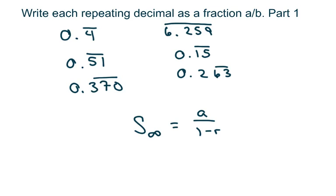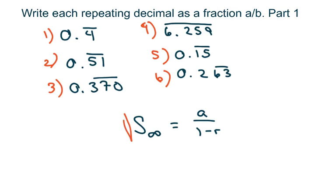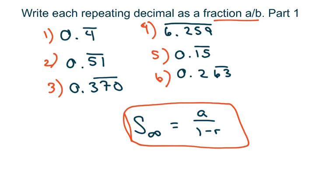Hi everyone. We're going to write each of these repeating decimals as a fraction. We have six problems here. In case you already know how to do some but just want to look at one, you can slide through it. We're going to use our infinite geometric series sum formula to find the fraction. This is the easy part, and the second part is going to look more like the last one here.